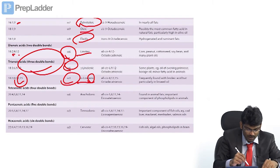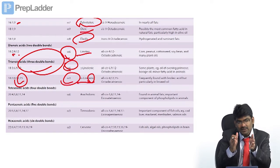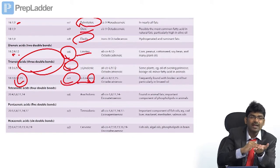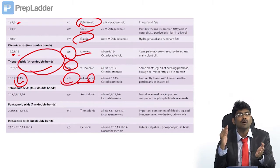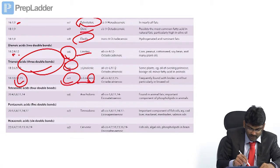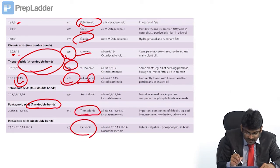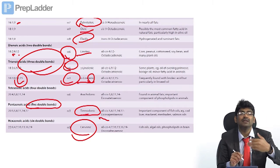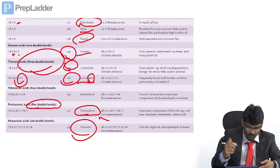Arachidonic acid is a tetraenoic acid with four double bonds. It has 20 carbons with double bonds at positions five, eight, eleven, and fourteen — these are always separated by three carbons. So 20 minus 14 = omega-6; arachidonic acid is an omega-6 fatty acid. A fatty acid with five double bonds is timodonic acid; with six double bonds it is cervonic acid (DHA). 'Eicosa' means 20 carbons — that is why compounds with 20 carbons are called eicosanoids.